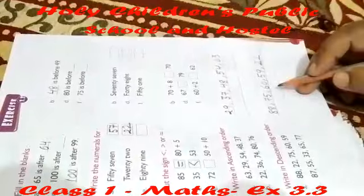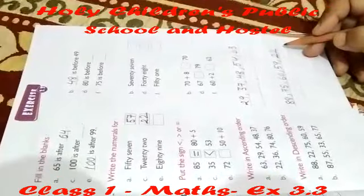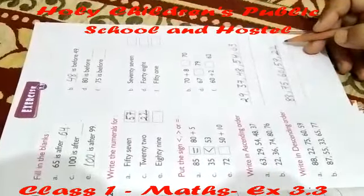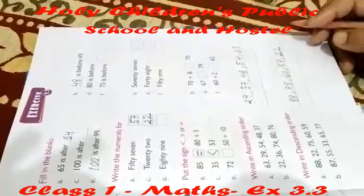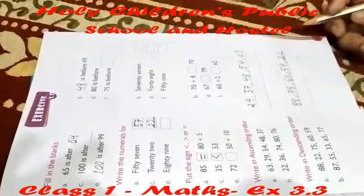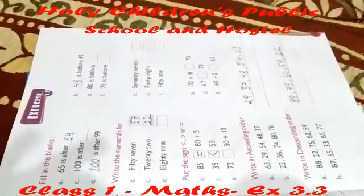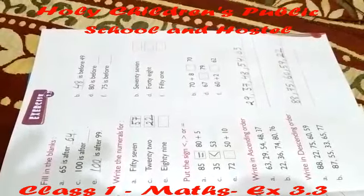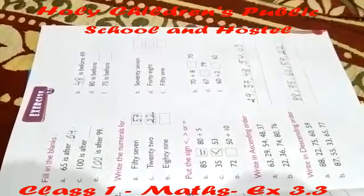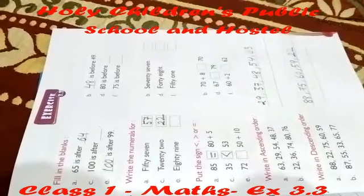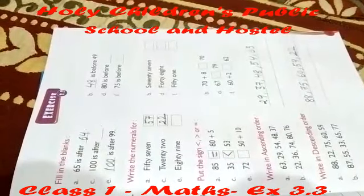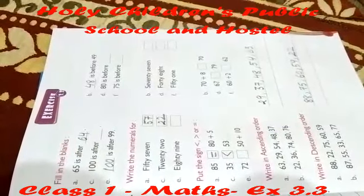The numbers are arranged from bigger to smaller order. That is all for this exercise, children. I hope you easily understood this exercise. Today's homework is to complete this exercise in your copy. I hope you complete the exercise. Thank you.